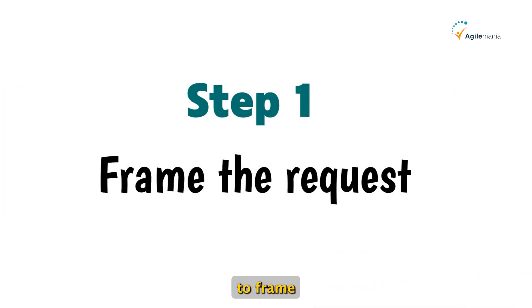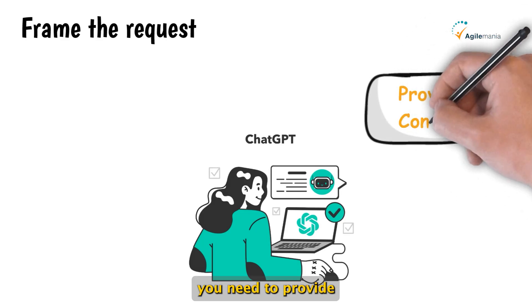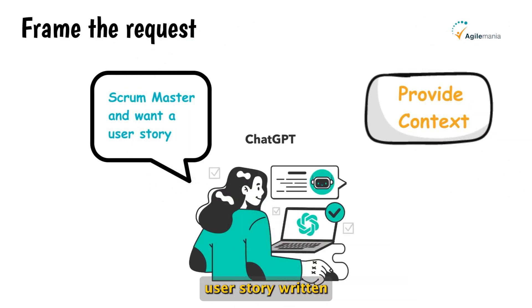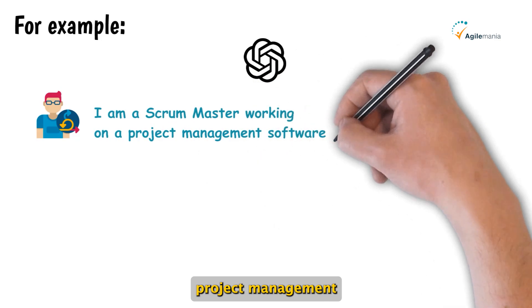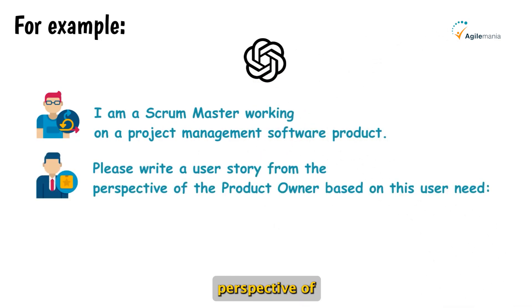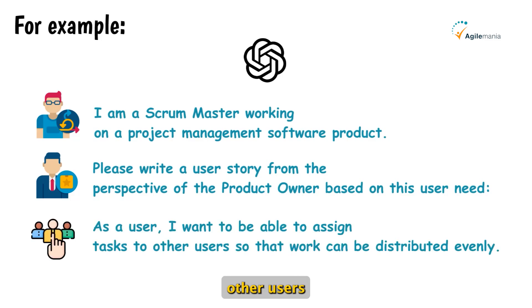The very first step is to frame the request. When prompting ChatGPT to write a user story, you need to provide some context. Explain that you are a scrum master and want a user story written for a software product. For example: 'I am a scrum master working on a project management software product. Please write a user story from the perspective of the product owner based on this user need: As a user, I want to be able to assign tasks to other users so that work can be distributed evenly.'